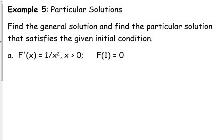To find a particular solution, you're going to start just like we've been starting all of our other problems. You're going to find the general solution to the differential equation, and then you're going to plug in the initial condition that they give you. So let's say that they tell us f prime of x is equal to 1 over x squared, with the condition that x has to be greater than 0. That's just a domain restriction — it has no real impact on taking the antiderivative.